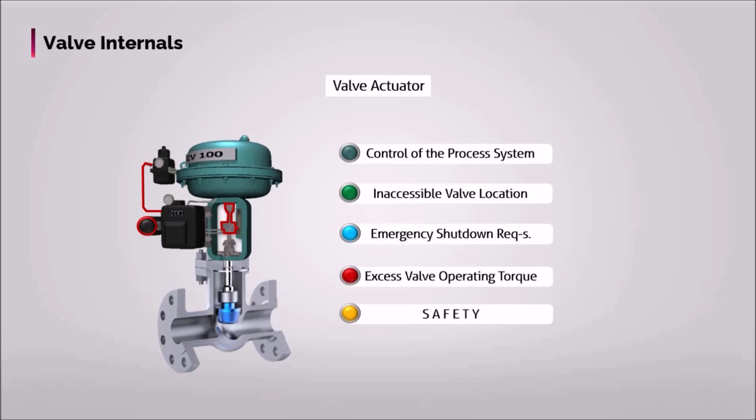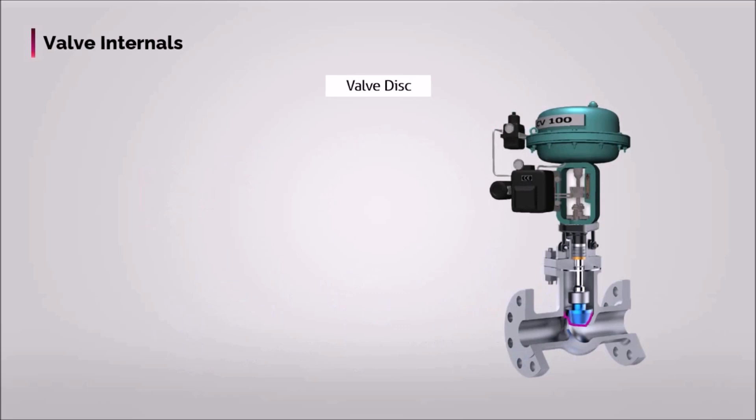The disc is the component that allows, throttles or stops the flow, depending on its position. The disc is the third most significant primary pressure boundary and they are usually forged and in some designs hard surfaced to provide good wear properties.